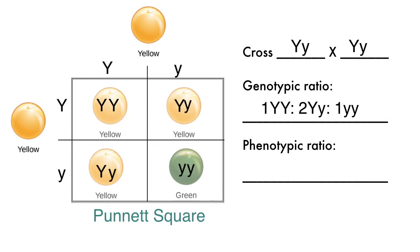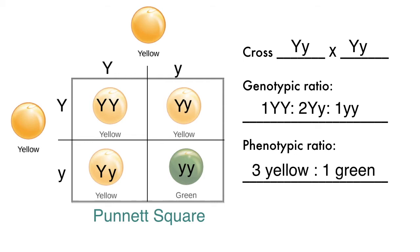We can also predict the phenotypic ratio of the offspring — what they will look like. 3 out of 4, or 75%, have at least one copy of the dominant allele, so they will be yellow. And the other 25% have only the recessive allele, so they will have the green phenotype. We can also use ratios instead of percentages to denote this.